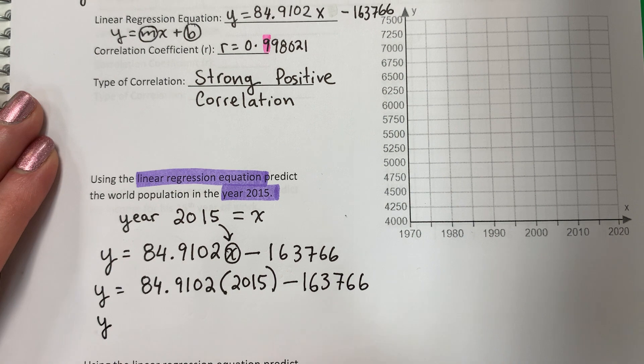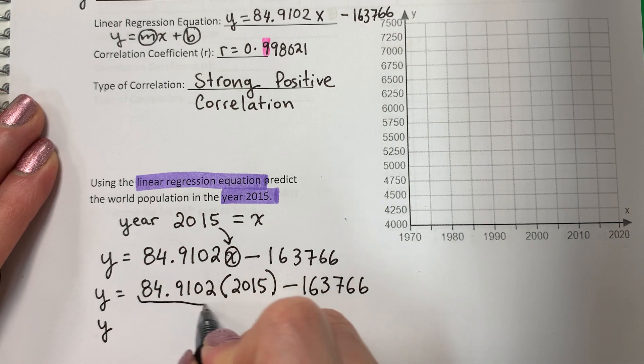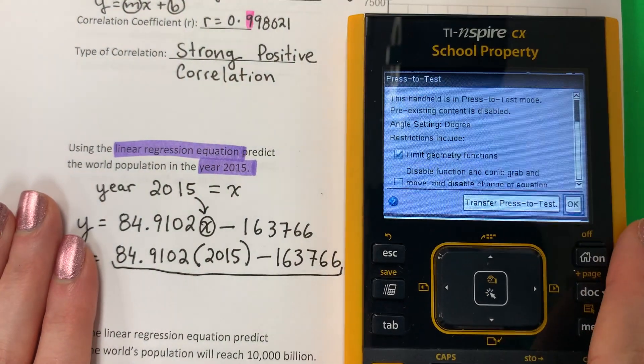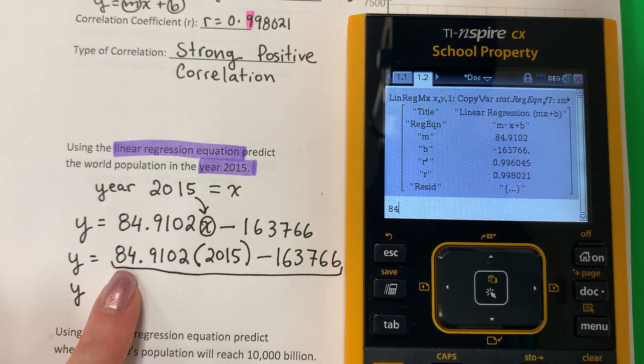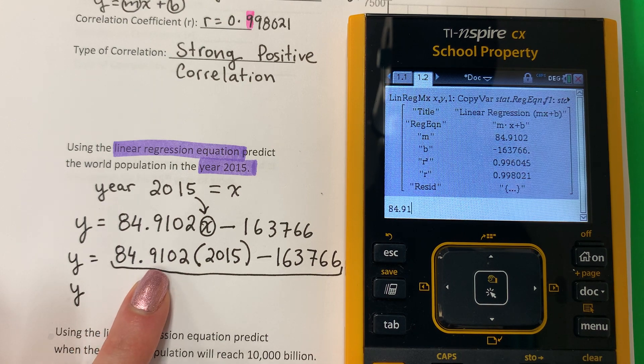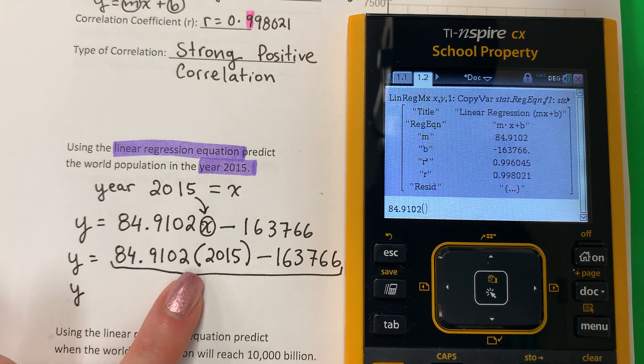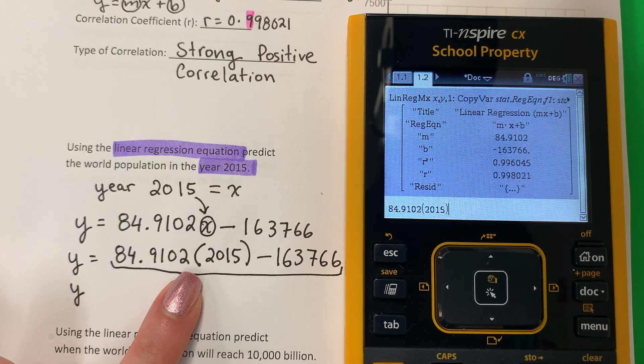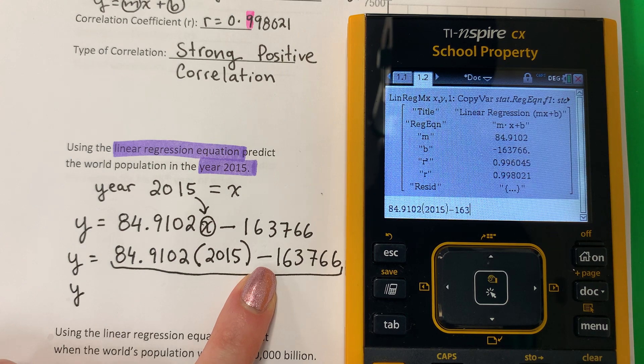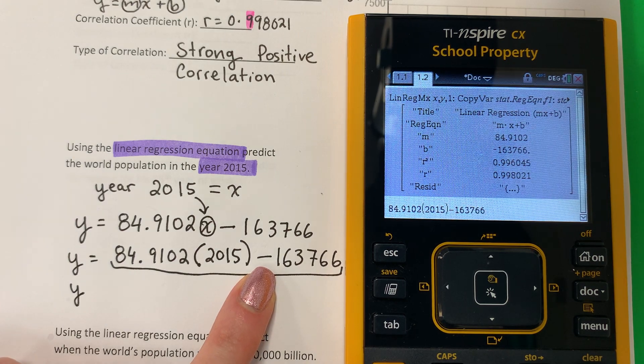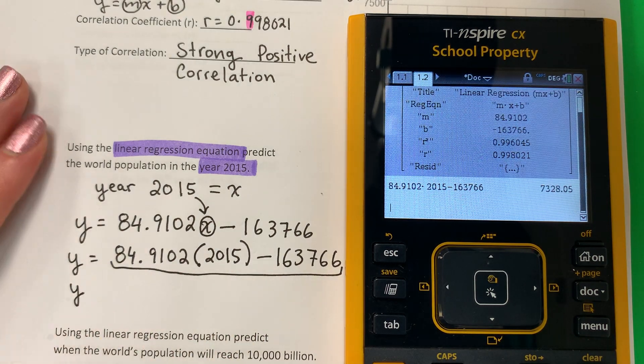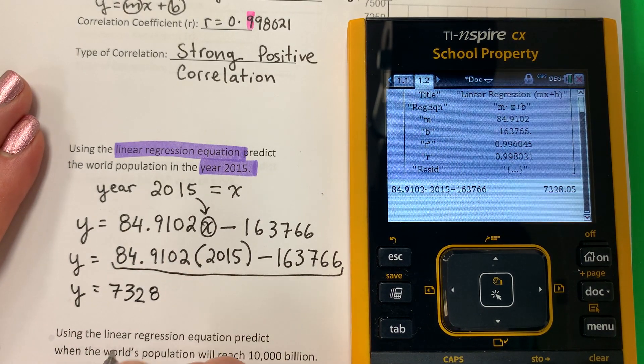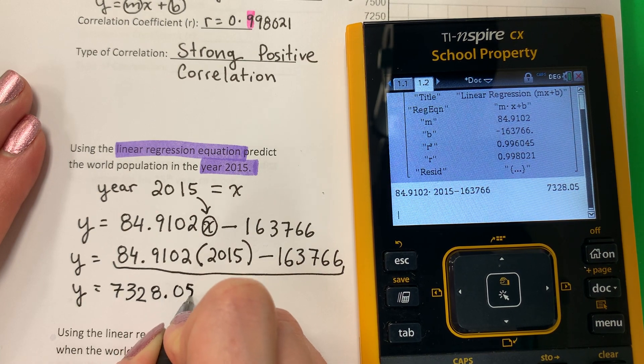Y equals. Go ahead and put that in the calculator. Esta parte. I'm going to put 84.9102. Parenthesis. 2015. Parenthesis. Minus. 163,766. And I get this number. 7,328. 7,328. 0.05.